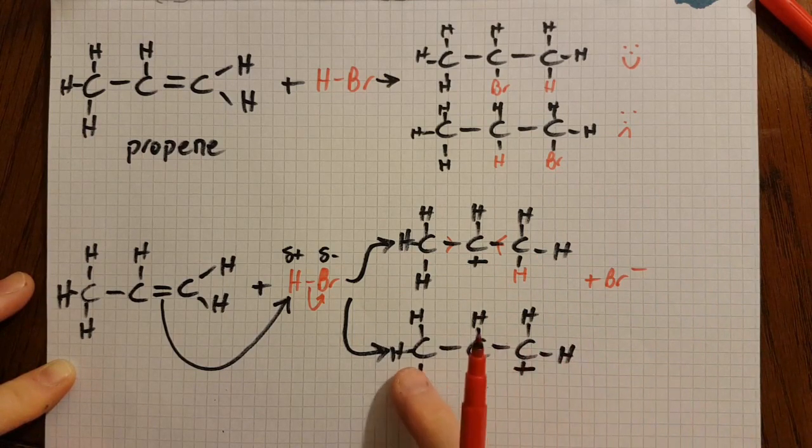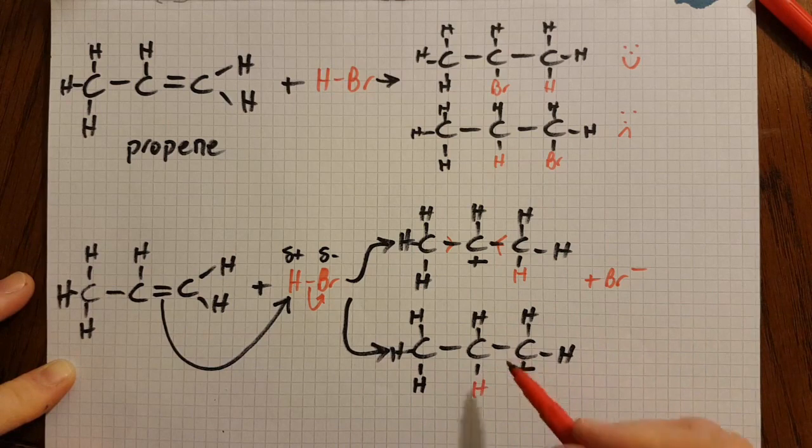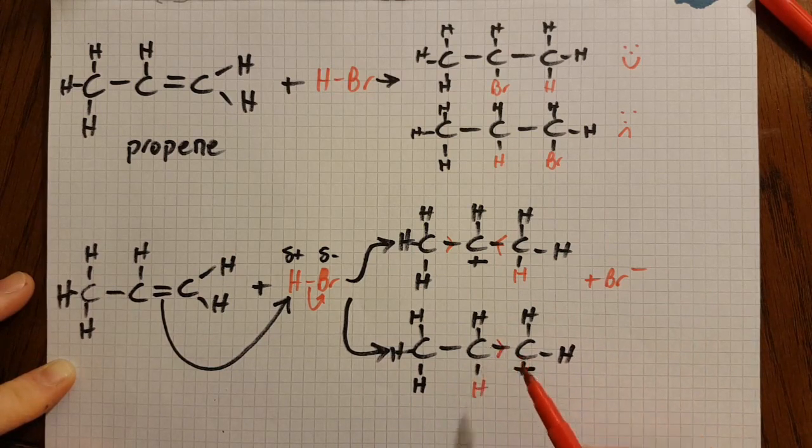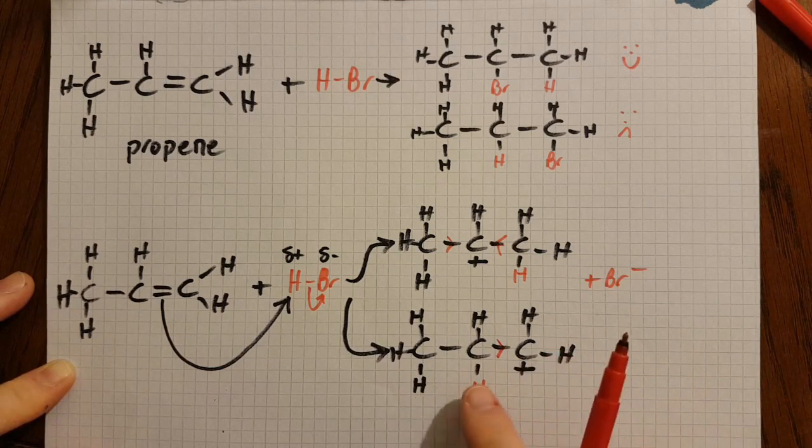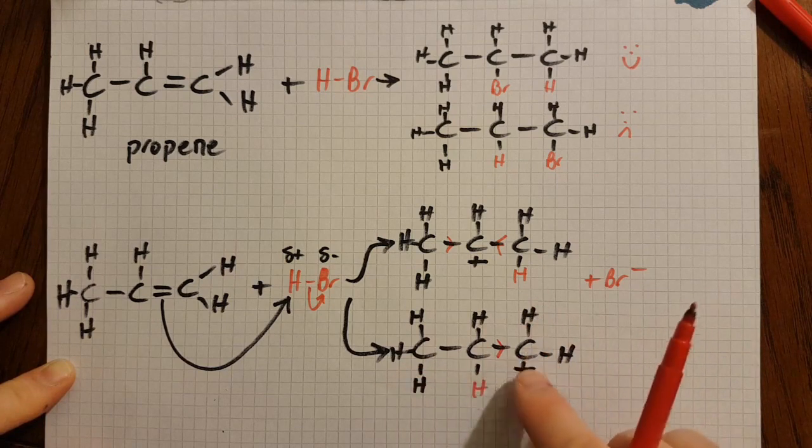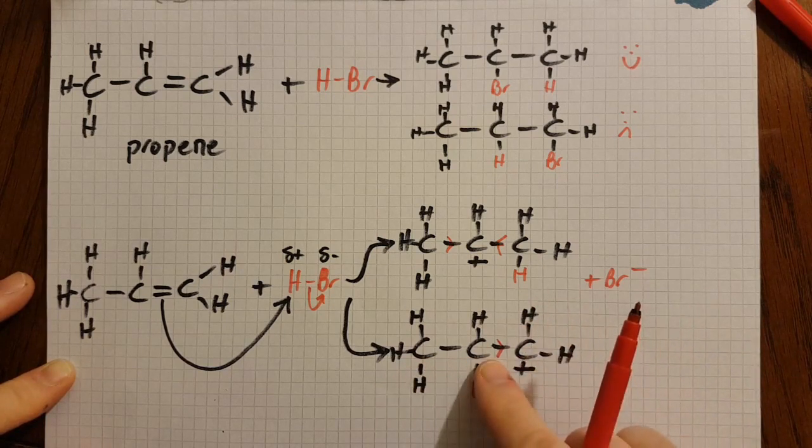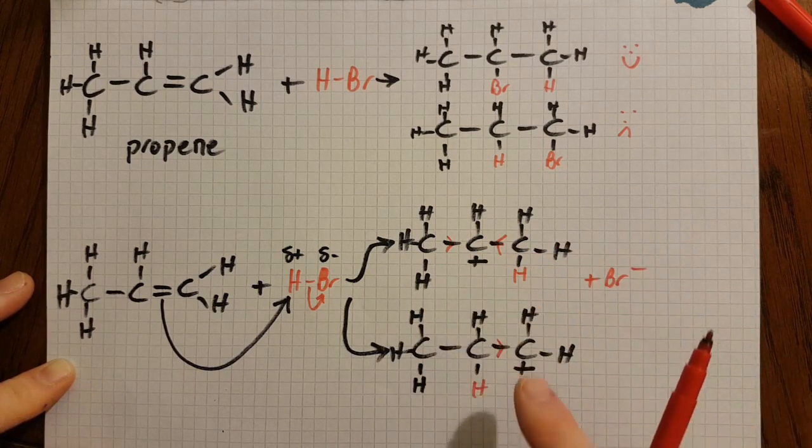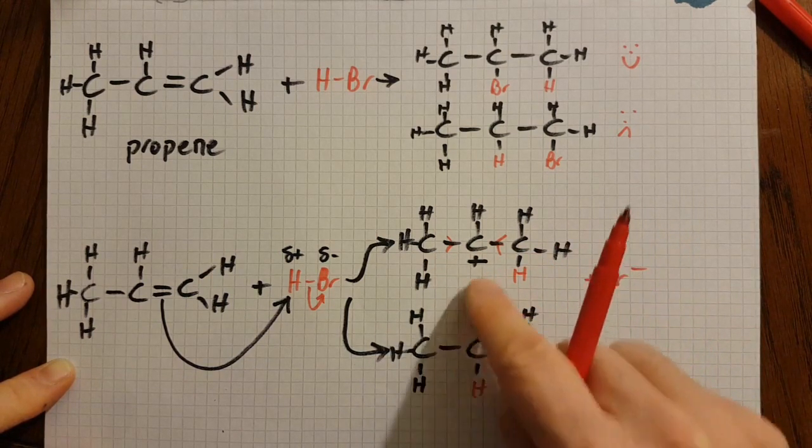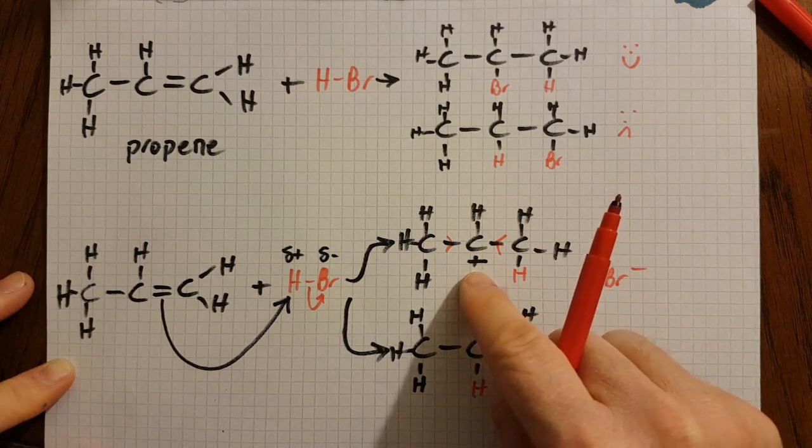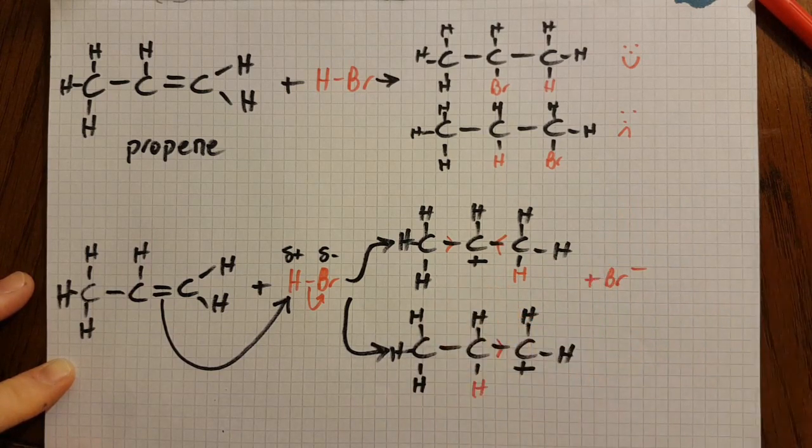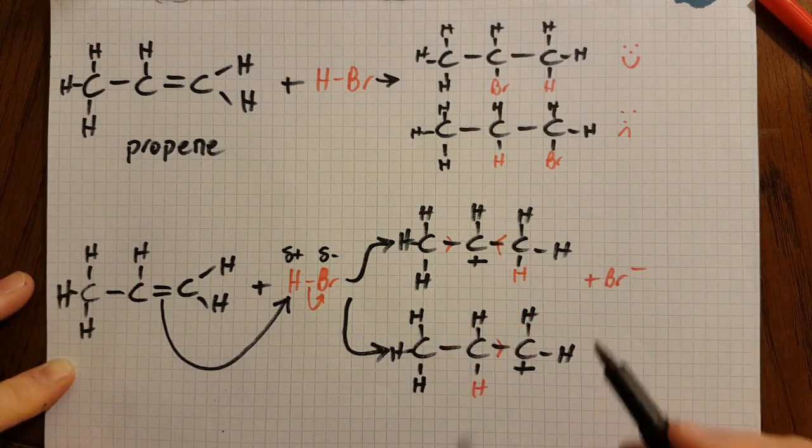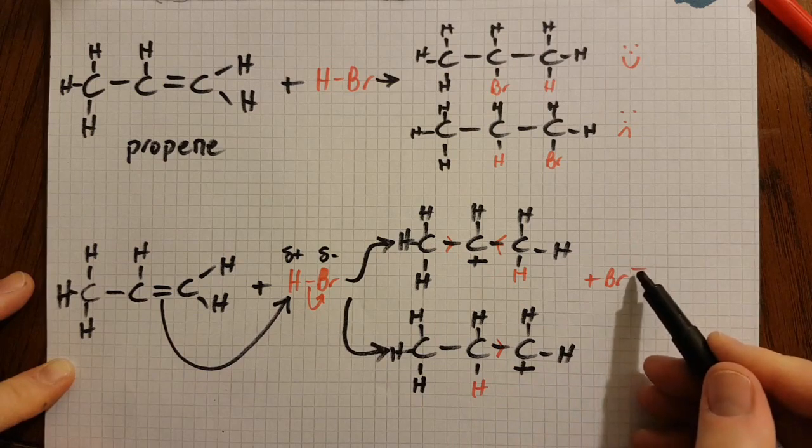Looking down to this one, there's only one alkyl group which is the ethyl group. There's some positive inductive effect going on, but there is only one alkyl group stabilizing that positive. So this is ultimately less stable—one alkyl group—and this is more stable—two alkyl groups. If this is the more stable of the two, then this is going to be preferentially formed.